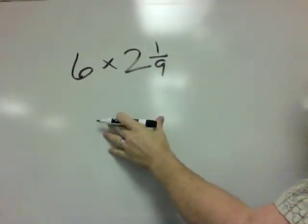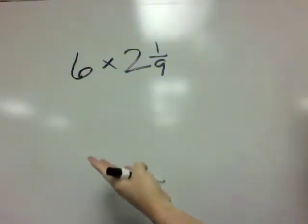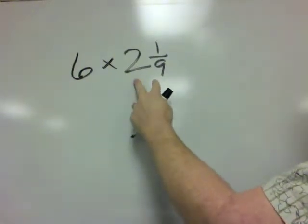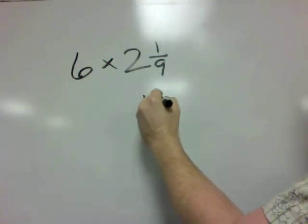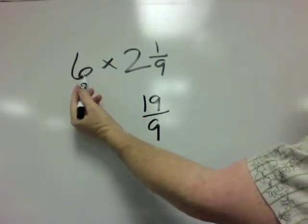Now in this problem, as in the previous examples, we need fractions. Either improper fractions or just common fractions. And right now, this is a mixed number. That's pretty easy. So 2 times 9 is 18 plus 1 is 19. So we have 19 over 9. That's pretty easy. But what do we do with this 6?